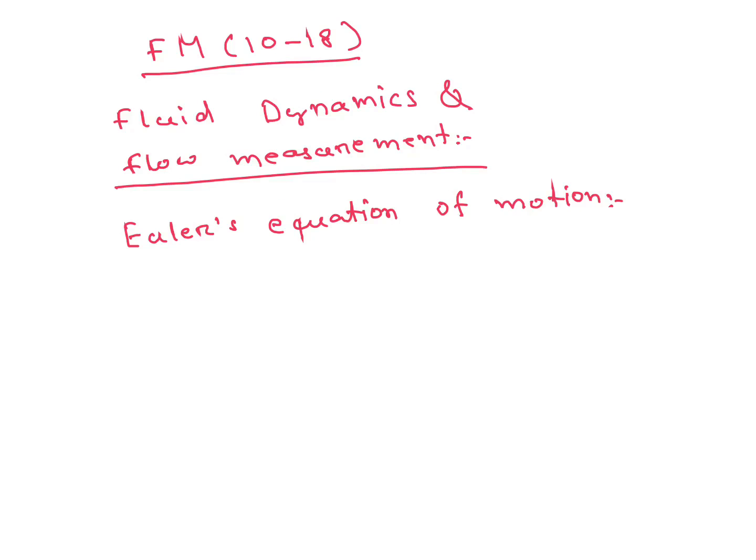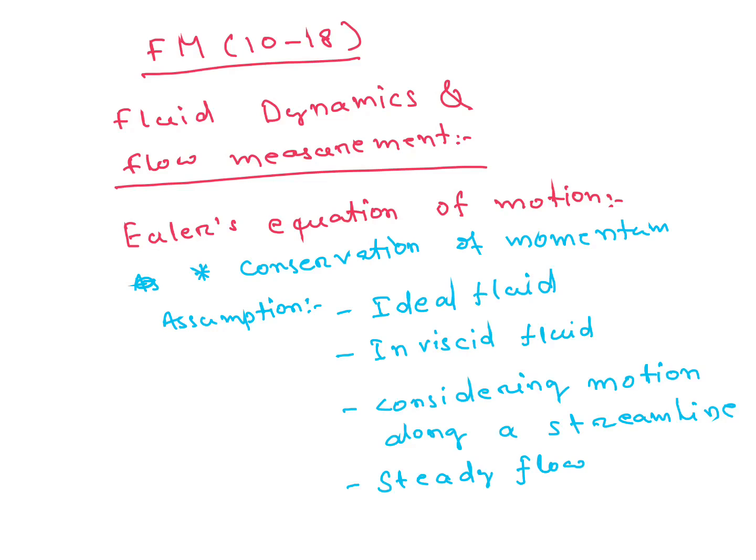First is Euler's Equation of Motion. Its assumptions are important - Conservation of Momentum, this is also important. Assumptions are Ideal Fluid and Inviscid Fluid, considering motion along a Streamline and Steady Flow. Its equation is dP/ρ + gdz + vdv = 0.